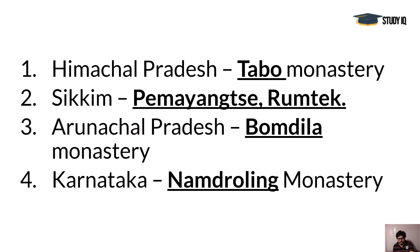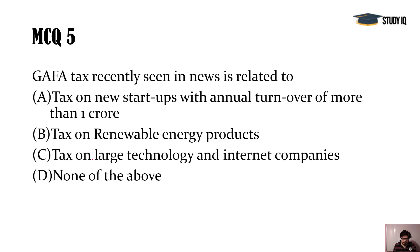Pema Yangtze Monastery is located in Sikkim. Many questions have appeared in prelims regarding monasteries. In Himachal Pradesh, the most famous is the Tabo Monastery, also associated with the Dalai Lama issue. From Sikkim: Pema Yangtze and Rumtek — Rumtek is again very famous. Bumdila is in Arunachal Pradesh, and Namdroling is in the southern part of India in Karnataka.